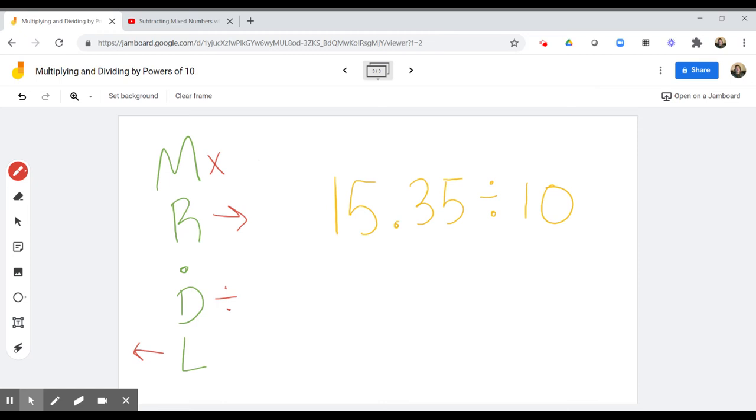So we have 15 and 3,500 ten-thousandths divided by 10. Because I am dividing, this decimal here is going to be moving to the left. And if I shade in or color in this 0 in 10, it reminds me that I have 1 power of 10 because I've colored in 1, 0. So that means I'm going to move this decimal point one time to the left.